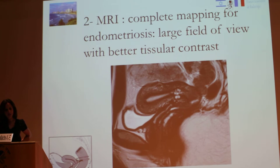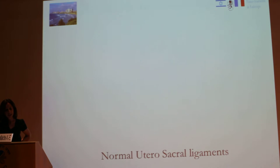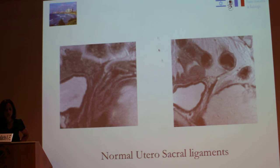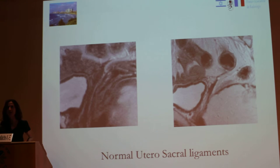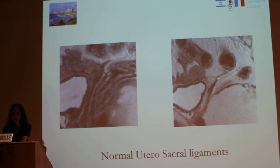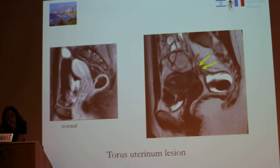MRI can provide complete mapping of endometriosis with a large field of view. For example, here are normal uterosacral ligaments. It is not possible to see the normal uterosacral ligament with ultrasound, but with MRI you can see the normal structure, making it very helpful for diagnosis. Here you have a normal pattern and here you have an involvement of the uterosacral ligament, with uterosacral thickening visible here.